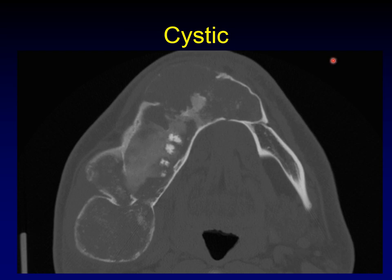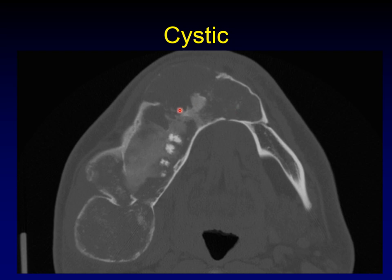This is the cystic form of fibrous dysplasia. There's some ground glass here for sure, but this jaw is expanded and there is relatively little calcification in the center of these large cystic areas. Notice that the cortex is relatively intact around the expanded bone and that the overall shape of the mandible is preserved.